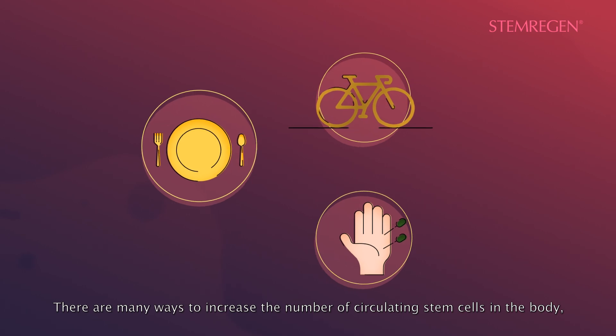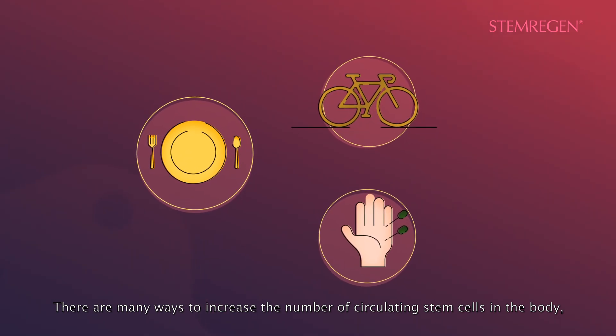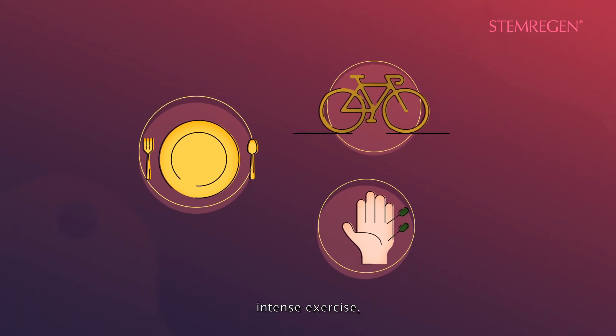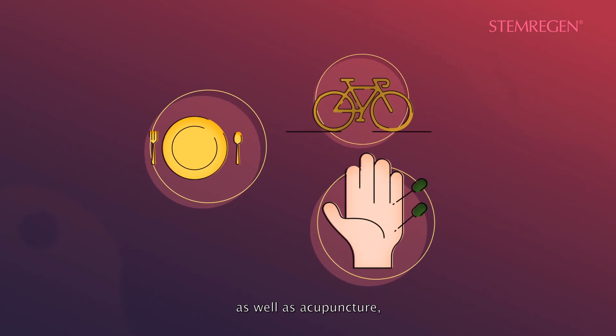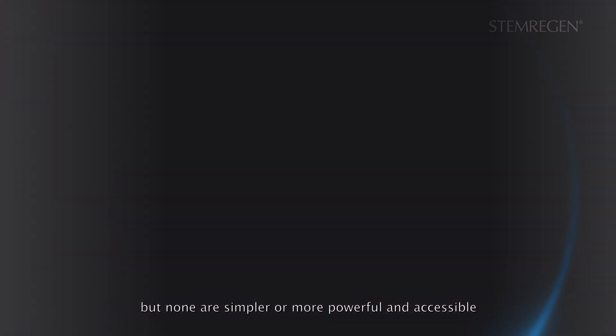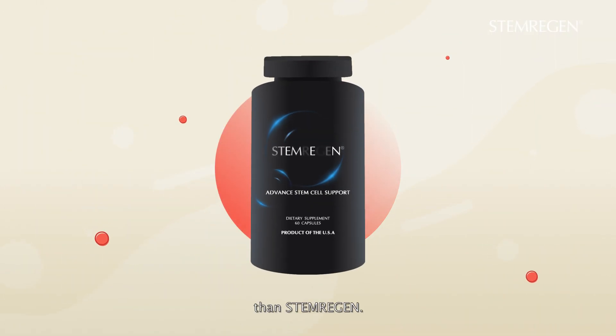There are many ways to increase the number of circulating stem cells in the body, such as fasting, intense exercise, as well as acupuncture. But none are simpler or more powerful and accessible than Stemregen.